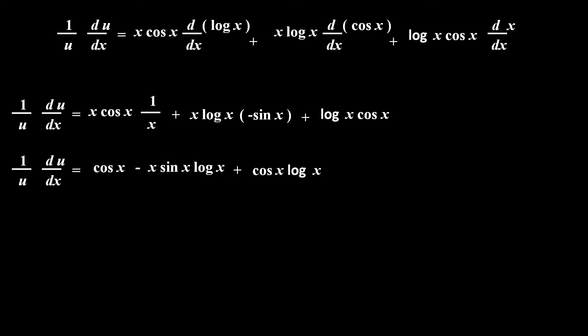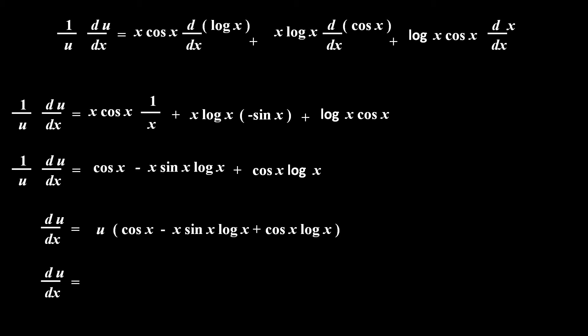So: 1 upon u into du by dx equals cos x minus x sin x log x plus cos x log x. Multiplying both sides by u, we get du by dx equals u into (cos x minus x sin x log x plus cos x log x). Substituting u equals x raised to x cos x, this is statement number 1.